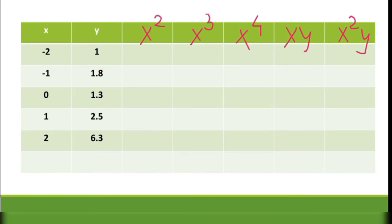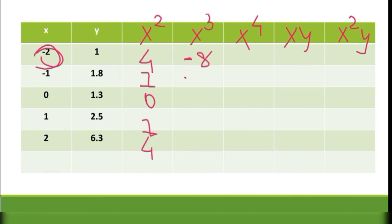Finding the values of x²: (−2)² = 4, (−1)² = 1, 0² = 0, 1² = 1, 2² = 4. For x³: (−2)³ = −8, (−1)³ = −1, 0³ = 0, 1³ = 1, 2³ = 8. For x⁴: (−2)⁴ = 16, (−1)⁴ = 1.